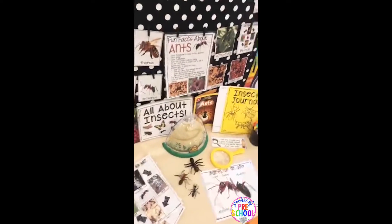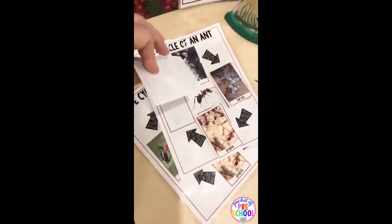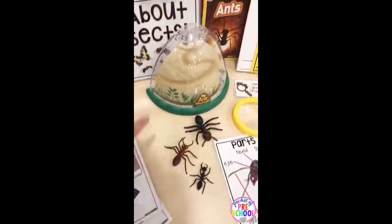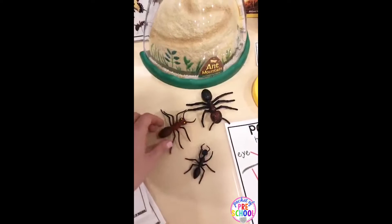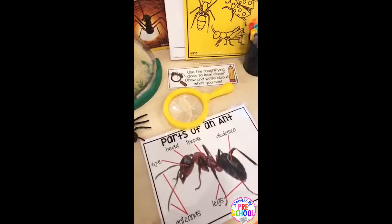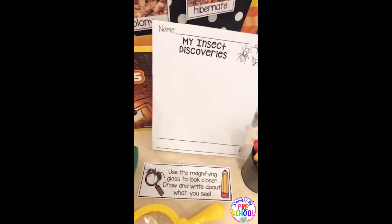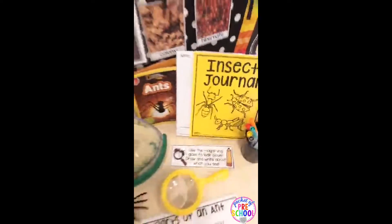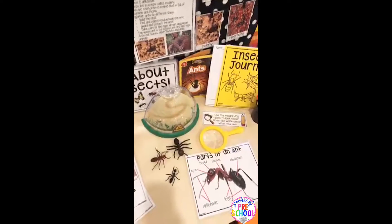This setup is to explore ants. I have the life cycle of an ant printable, and these are on Velcro so they can take them off and put them in order. There's also a one-page poster, and then you would have your insect habitat. I would put out some plastic insects of whatever insect you have, and then the parts of an insect. For the journal pages, they are general 'my insect discoveries' or 'my insect journal,' and you can color the journal cover to match the insect — red for ladybugs, yellow for ants.